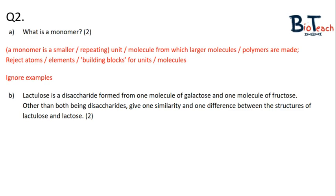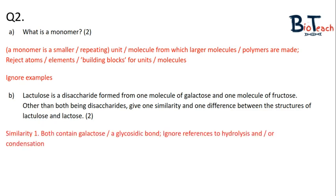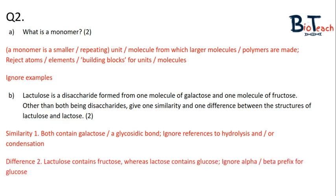For question 2B, there's a bit of a blurb about lactulose, and it asks you to state the similarity and the difference between lactulose and lactose for two marks. We have to think back to our disaccharides and the monosaccharides that make them up. The paragraph states that lactulose is a disaccharide made up of galactose and fructose, and you should know that lactose is made up of glucose and galactose. The similarity, therefore, is that both contain galactose. You can also say that both contain glycosidic bonds. The difference is that lactulose contains fructose, whereas lactose contains glucose. Note that you have to state the difference, not just imply it — if you said lactulose contains fructose without telling the examiner what lactose contained, you would miss out on the second marking point.